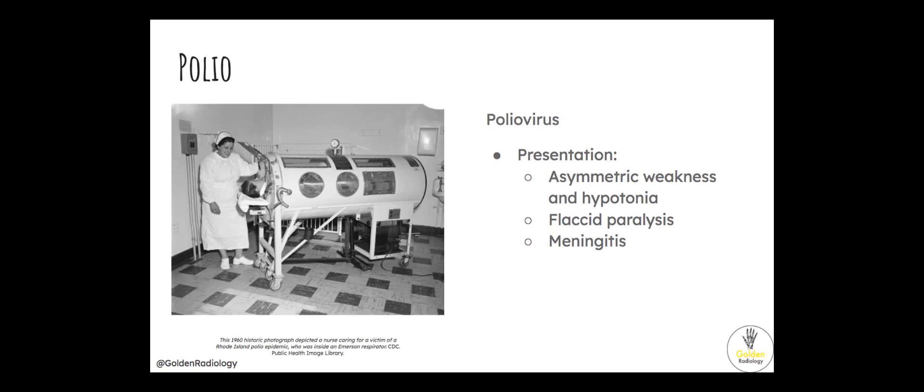Polio is caused by the poliovirus. The presentation is asymmetric weakness and hypertonia. You can also get flaccid paralysis and meningitis.